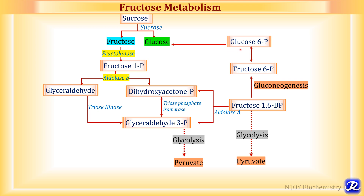Glucose 6-phosphate can also be derived from phosphorylation of glucose by hexokinase or glucokinase, or it can be derived from glycogen via glycogenolysis, and there can also be formation of glycogen from glucose 6-phosphate. So the various fates of fructose depend on whether the body is in the well-fed state or in fasting and starvation.